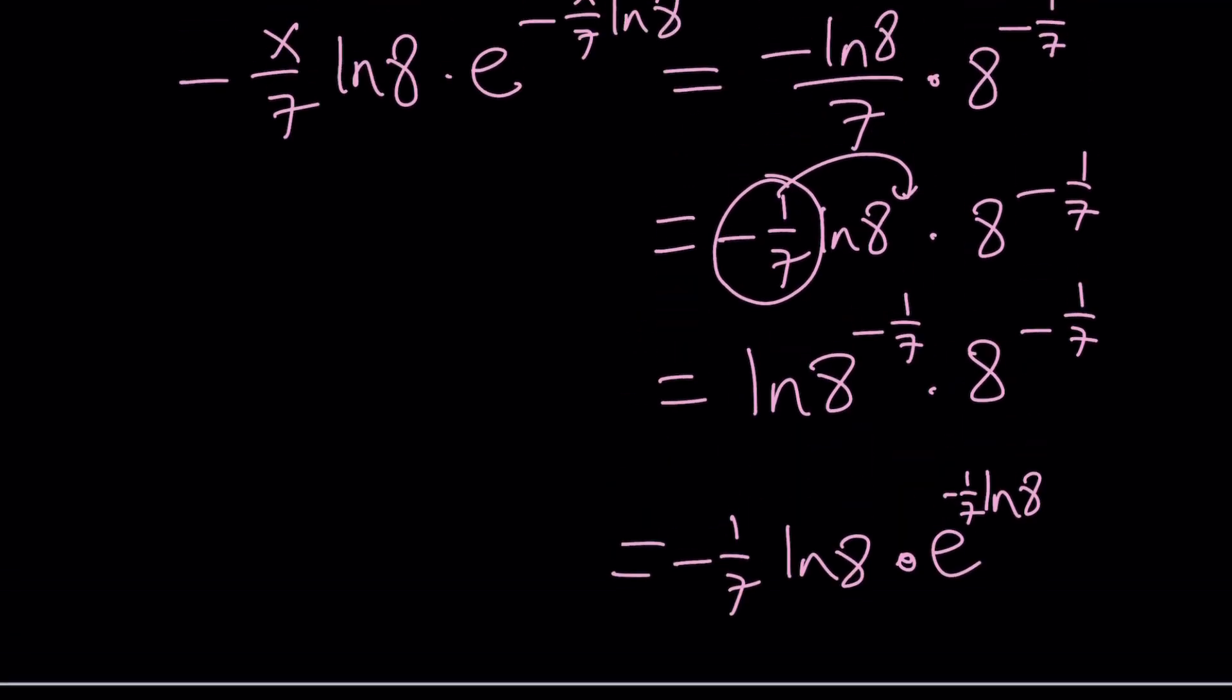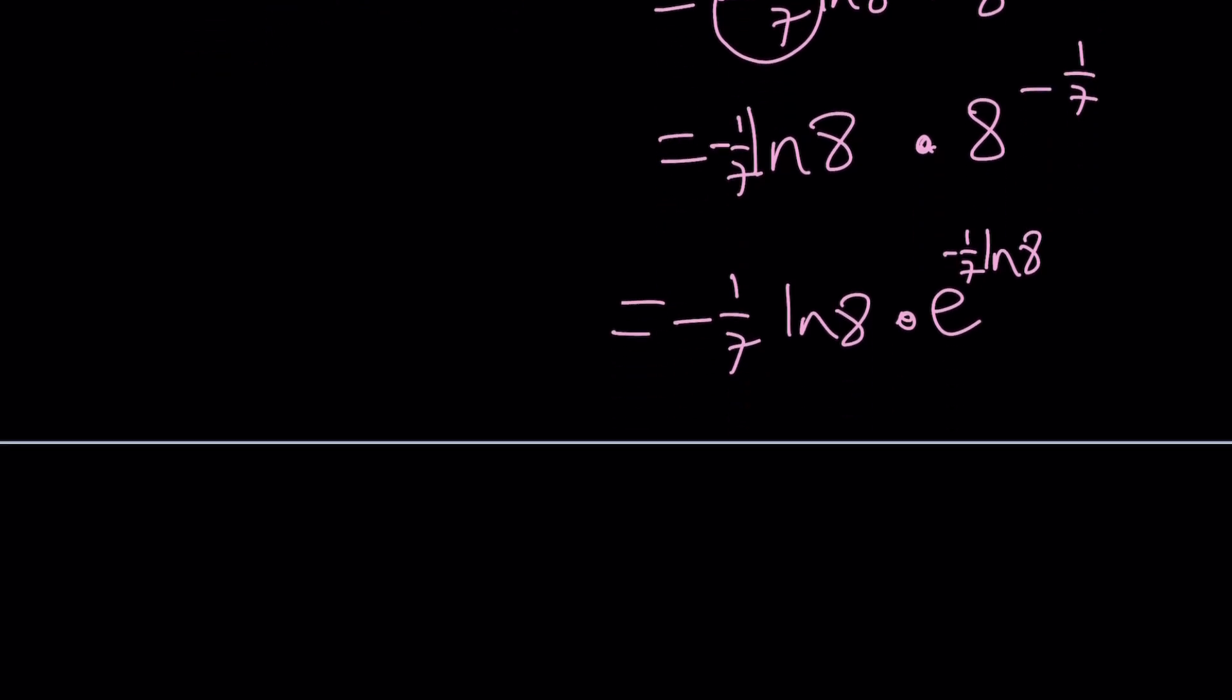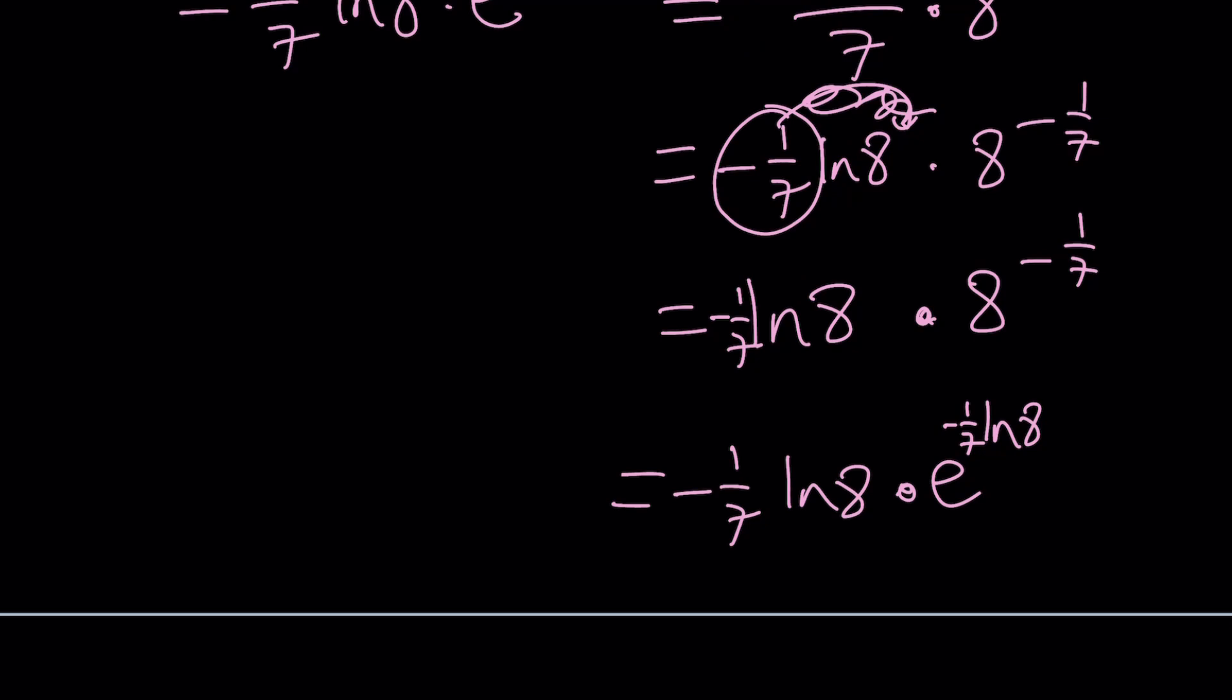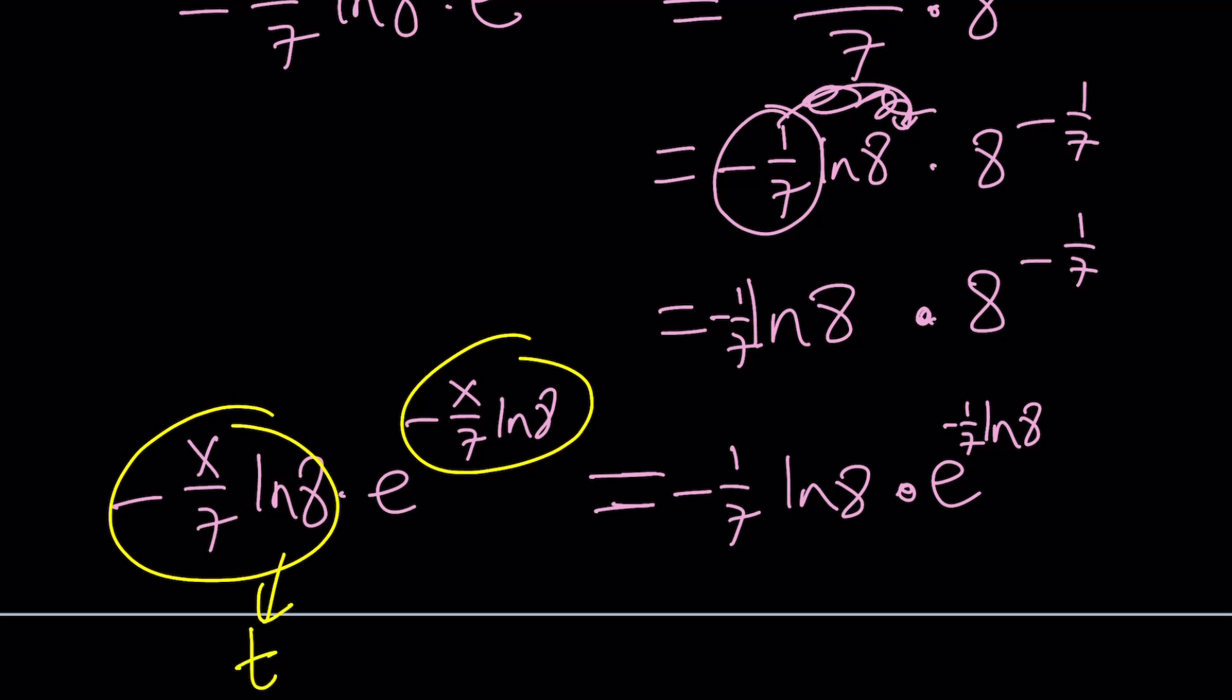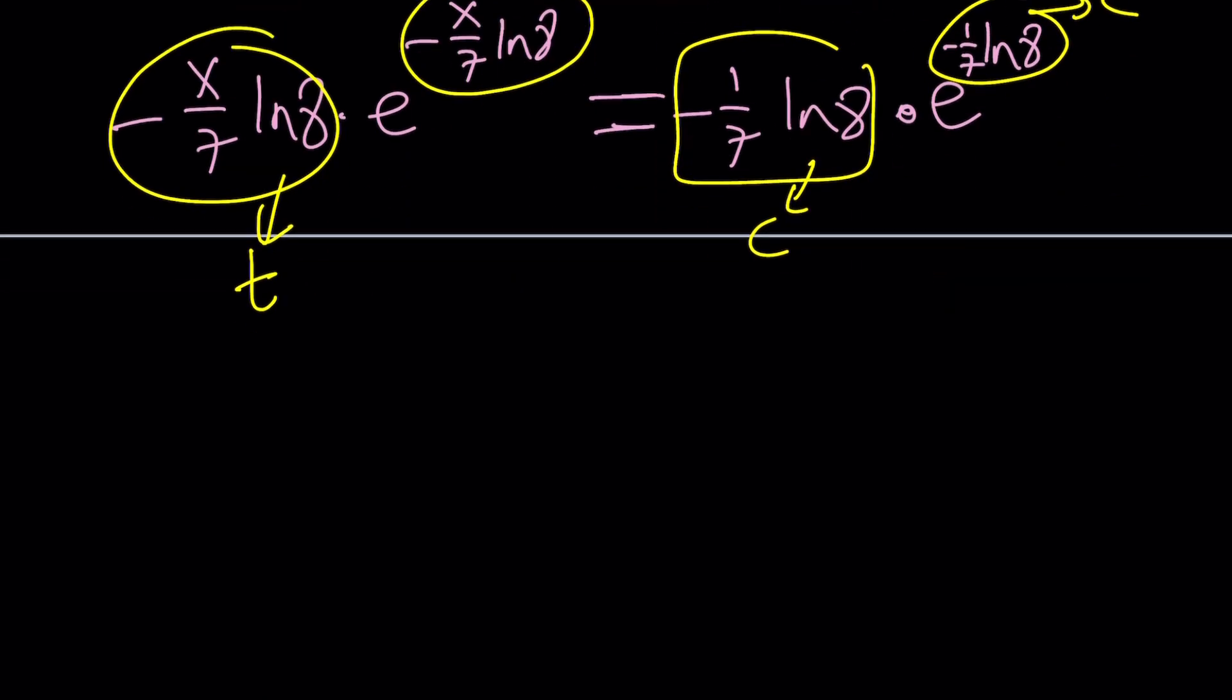So I'm going to write it again as negative 1 over 7 ln 8 times e to the power that. Now, what do we have on the right hand side? Negative x over 7 ln 8 times e to the power negative x over 7 ln 8. Notice that we have the same thing here and here. So if you call this t, this is going to become t. And since this is a constant, let's call this c. So we have something like t e to the t equals c e to the c.